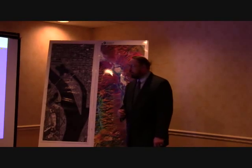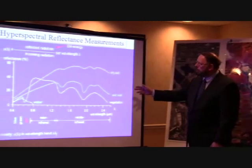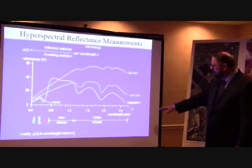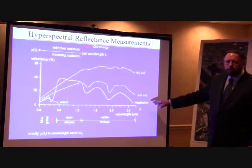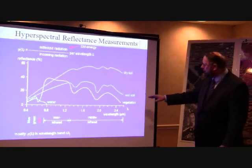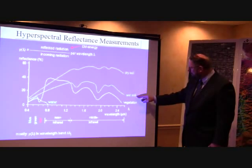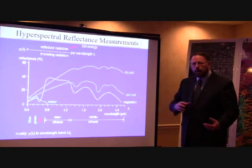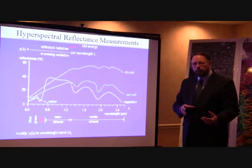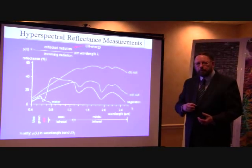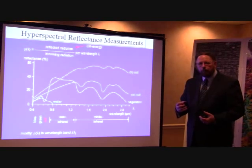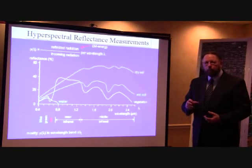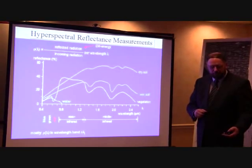Over here to the right, we have an example of hyperspectral reflectance measurements, looking at some of the characteristic signatures of material that would be on the ground: dry soil, wet soil, and vegetation. Part of the process is to take those spectral signatures from the sensor and match them to a library in order to identify what you're actually seeing in the image.